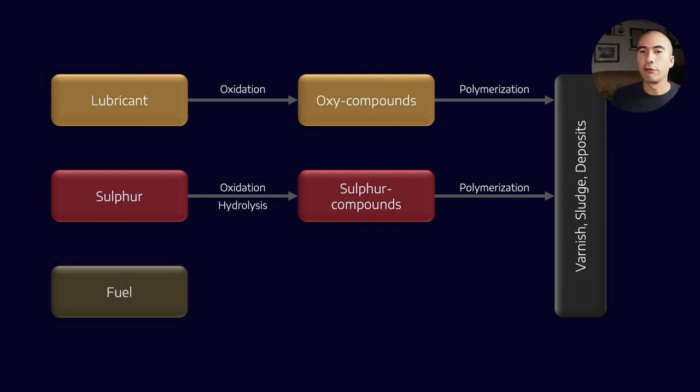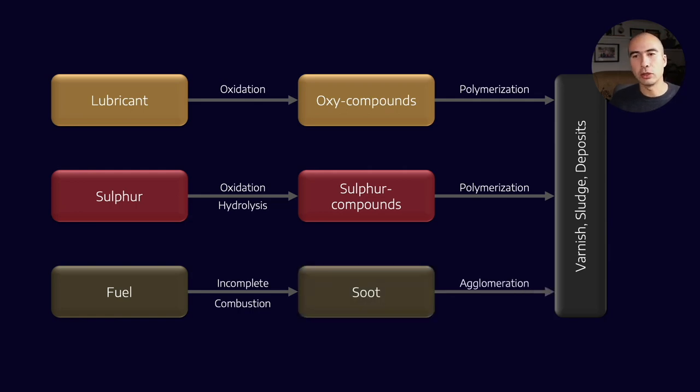Finally, fuel that doesn't undergo complete combustion produces soot, which agglomerates and forms deposits. We covered the first two pathways in the previous lesson, so now we'll concentrate on this last track.